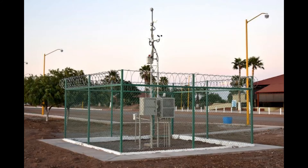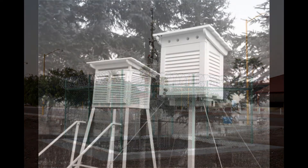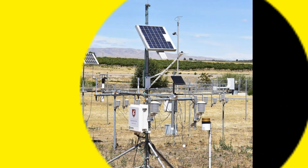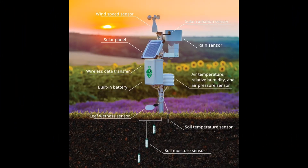Did I miss any? Let me know in the comments if I did. Now, at every weather station, information is gathered about these eight basic elements of weather. The information is gathered by using devices or instruments, simply known as weather instruments.